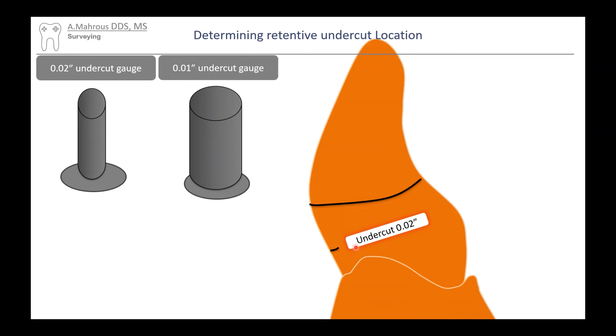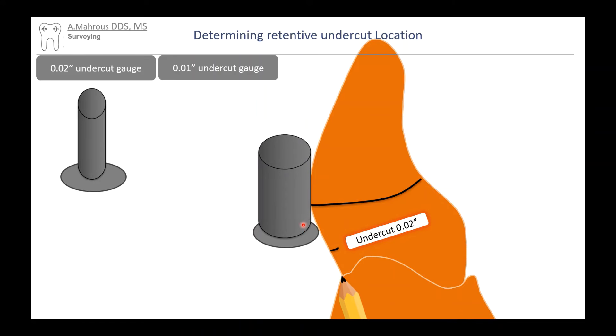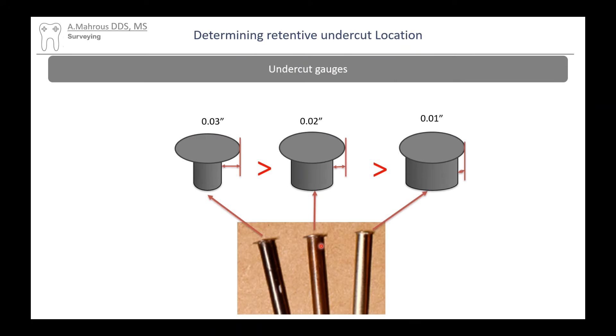You can see if we use a 0.01 undercut gauge, again, moving it so that the shank and the disc touch, that disc will now be considered touching at a 0.01 undercut. In this slide here, you can appreciate the difference in distance representing the 0.03, 0.02, and 0.01 undercuts.